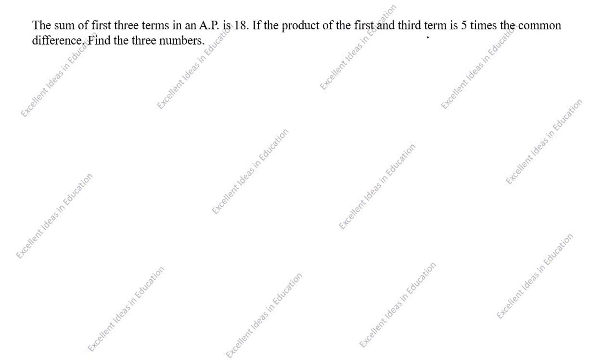Hi students! Welcome to my channel Excellent Ideas in Education. Today we are going to solve this arithmetic progression problem. This is a board exam problem. The sum of first three terms in an AP is 18. If the product of the first and third term is five times the common difference, find the three numbers.